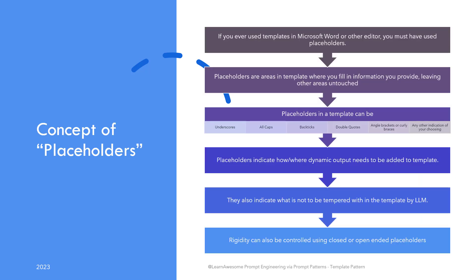If you have ever worked with templates, say in Microsoft Word, or filled any bank or government forms using a provided template letter, you must be familiar with the concept of placeholders. A placeholder is the indication in a template where you are supposed to fill in your information, leaving the other areas untouched. Placeholders in templates can be underscores, all caps, backticks, double quotes, angle brackets, etc. As a user of ChatGPT, you would be instructing the model how the output should be inserted into the template using the placeholders. Not only do the placeholders indicate how and where output needs to be added to the template, they also have an interesting side effect — they implicitly instruct what not to add to the output.